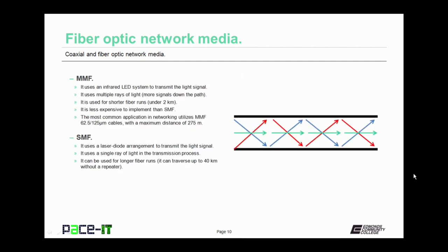MMF uses an infrared LED system to transmit the light signal and sends multiple rays of light down the fiber. MMF is used for shorter runs — you cannot exceed 2 kilometers. It is less expensive to implement than single mode fiber. The most common application in networking utilizes MMF 62.5-125 cables, and the maximum span those can run is 275 meters.